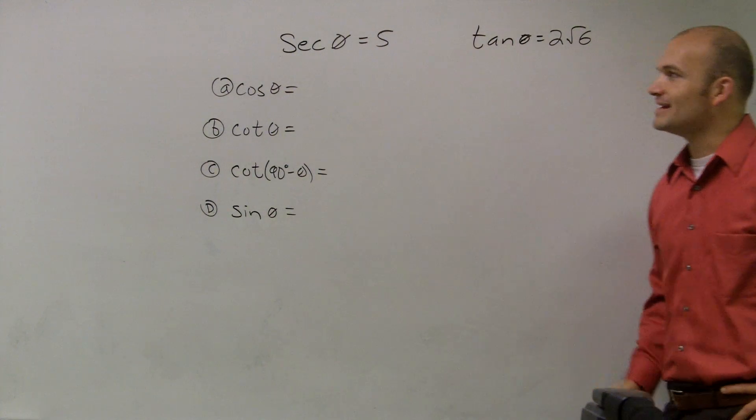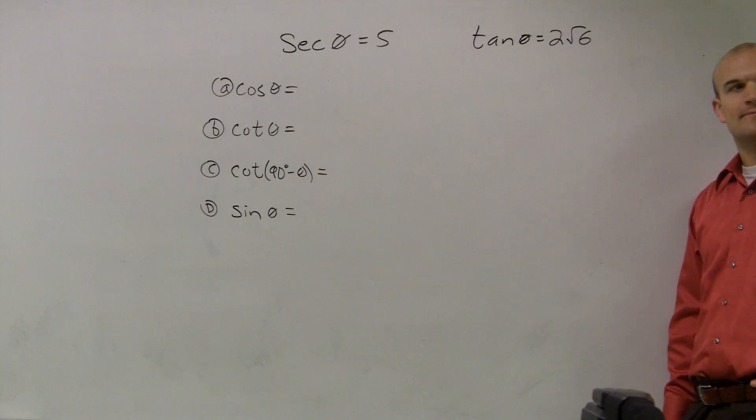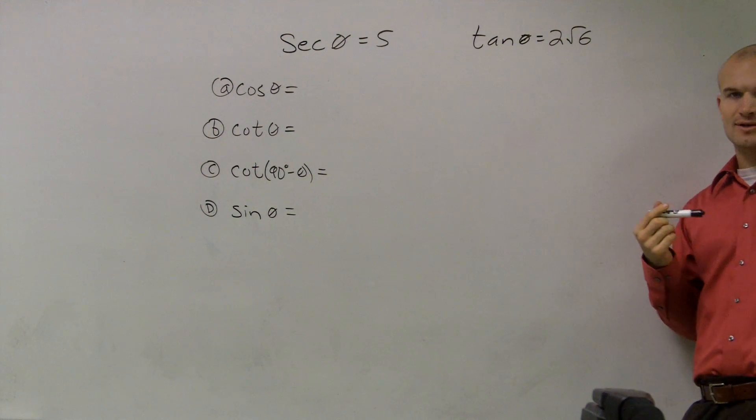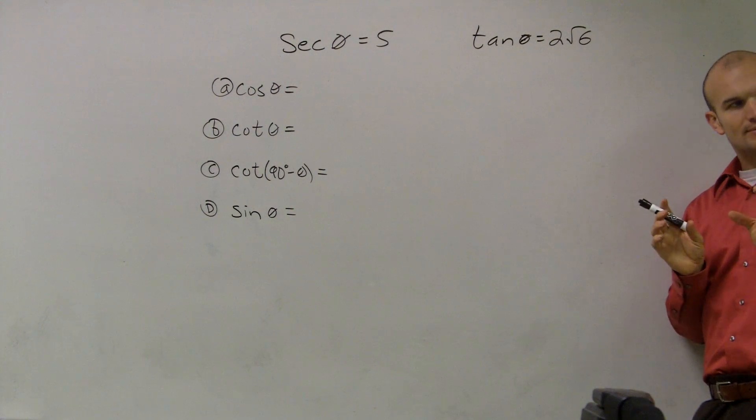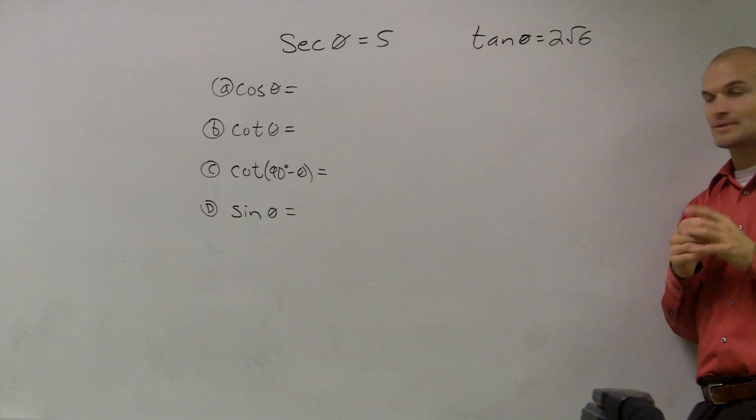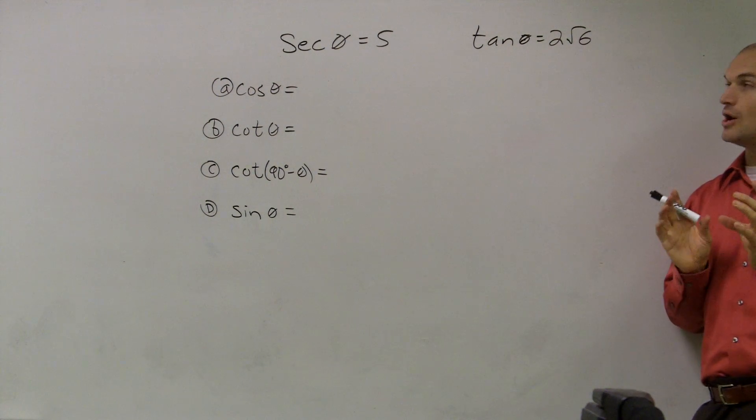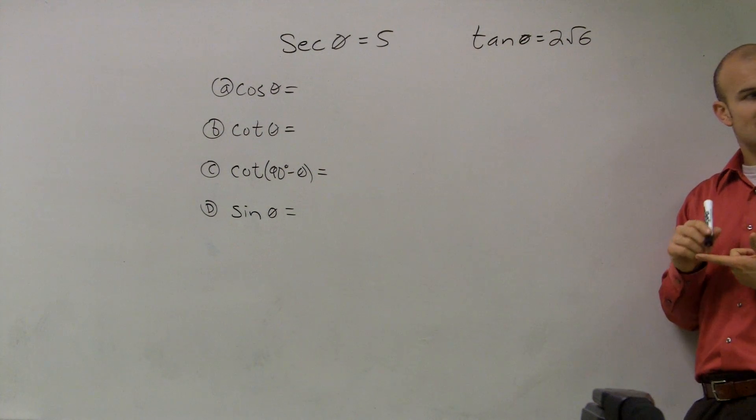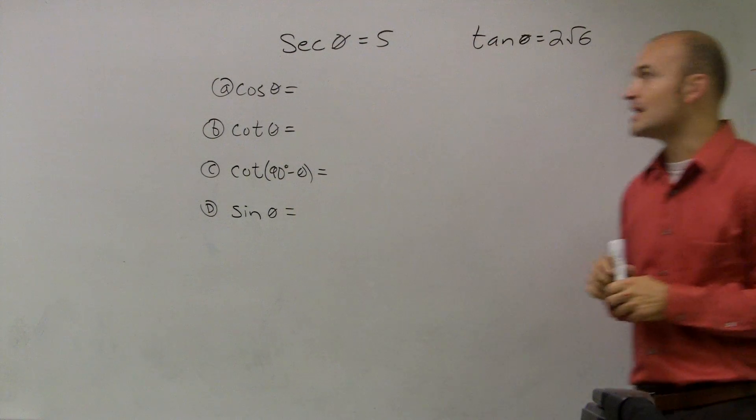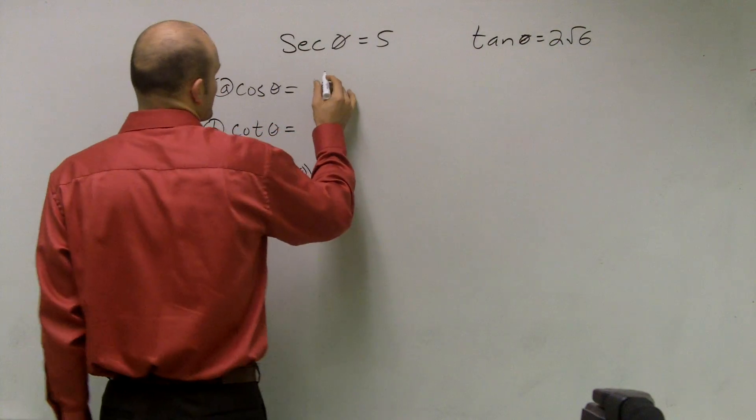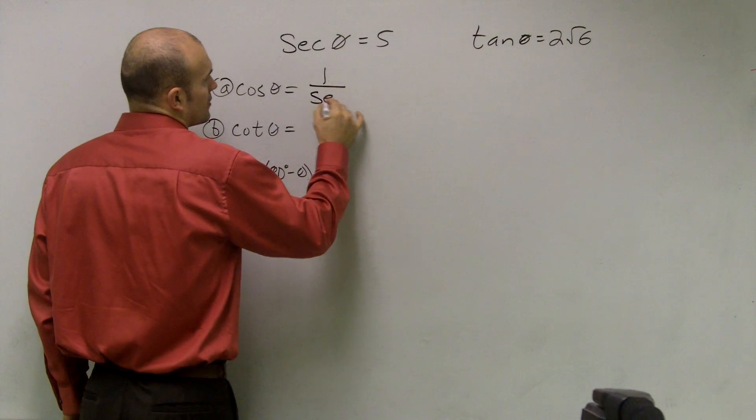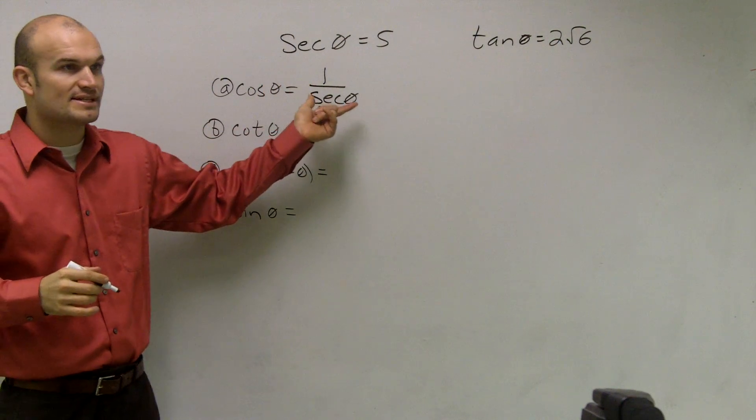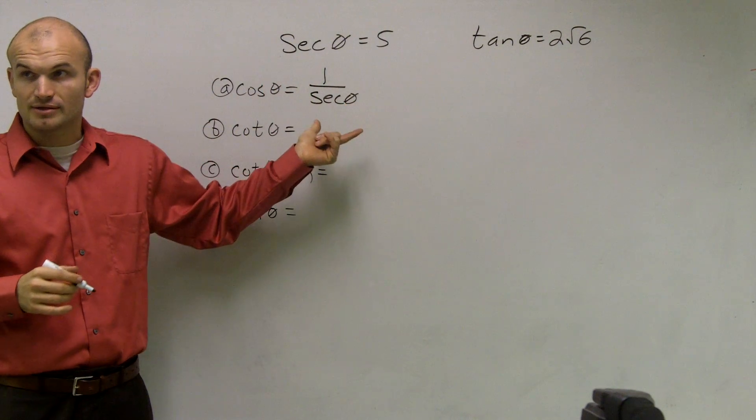So if I'm looking at this and I say what is cosine of theta, I told you guys to write in those two boxes. The only thing I recognize about cosine is I know that cosine is the reciprocal of 1 over secant, right? Remember these are reciprocals of each other?